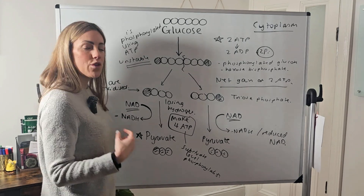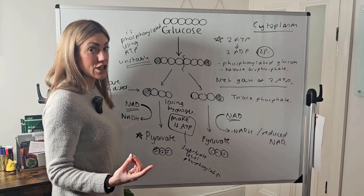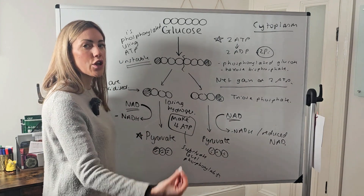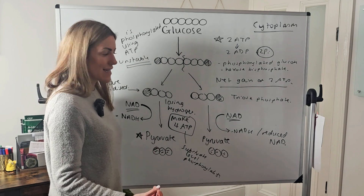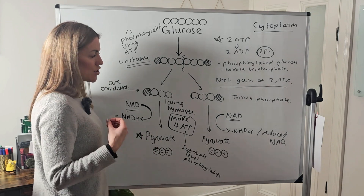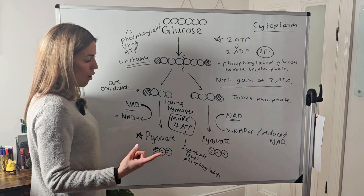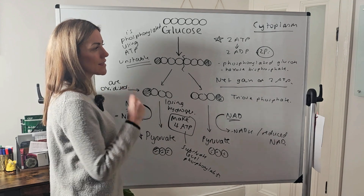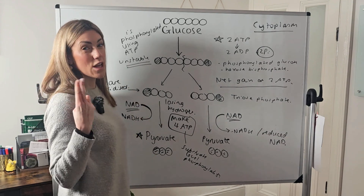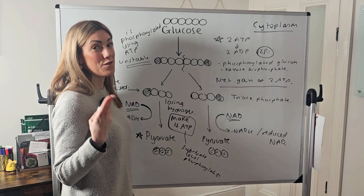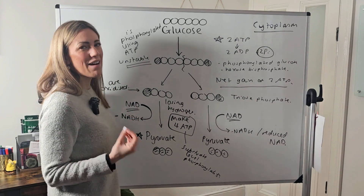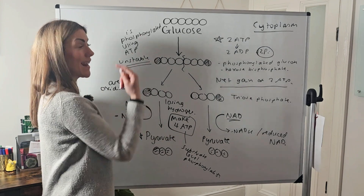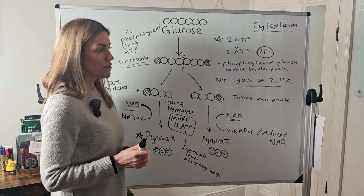If we continue into aerobic respiration, we move into the link reaction, the Krebs cycle, and oxidative phosphorylation, where much more ATP is produced. Glycolysis only gives a net gain of two ATP, so if we only have anaerobic respiration, that's all the ATP we get per molecule of glucose. In aerobic respiration, the other stages allow us to produce much, much more.